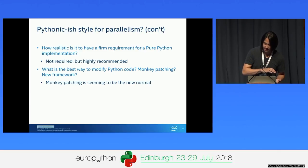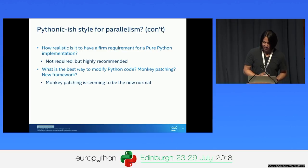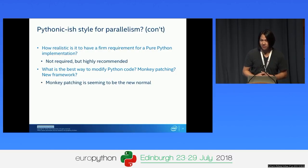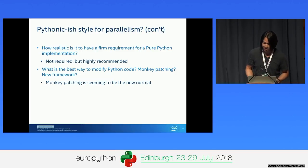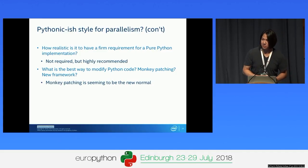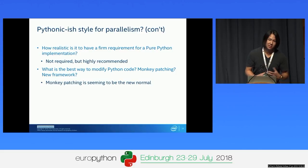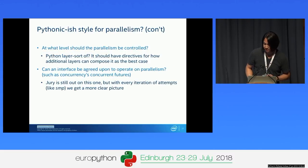Answering the first two questions: How realistic is having a firm requirement for pure Python implementation? I would say it's not required, but it's highly recommended. We can see with the uptake of released packages that people are trending towards pure Python variants. What's the best way to modify Python code? Monkey patching is seeming like the new normal. We're seeing many examples where monkey patching is becoming the de facto standard when making packages that augment other packages' behavior—we see that in scikit-learn and other places.